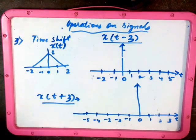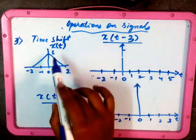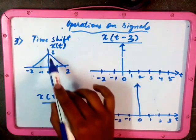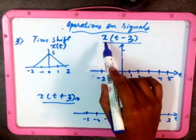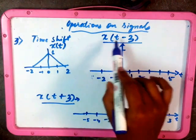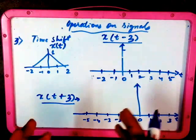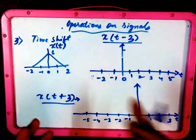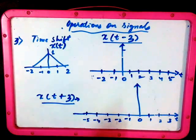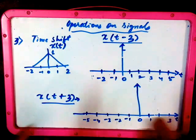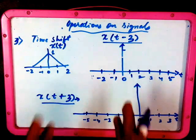Today we are going to see time shifting. We have a problem x(t) which is having the time range from -2 to +2 whose amplitude is 1. So we have the problem of time shifting x(t-3). t-3 indicates that it is going to shift your original signal 3 positions towards the positive x-axis, that is the right side of your time domain.